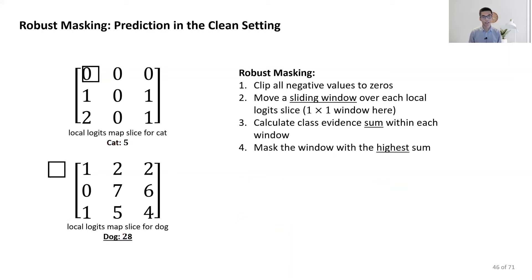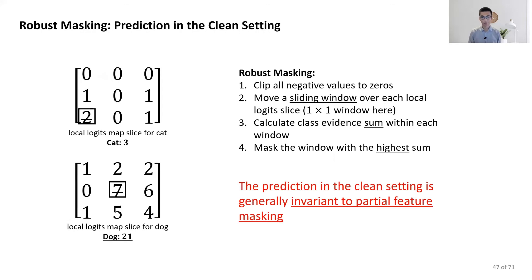On the other hand, the clean prediction, find it 2, find it 7. After masking, we still have the correct prediction. Now, we observe that the clean prediction is generally invariant to feature masking. Now, we know how our defense works. Small receptive field and secure feature aggregation.